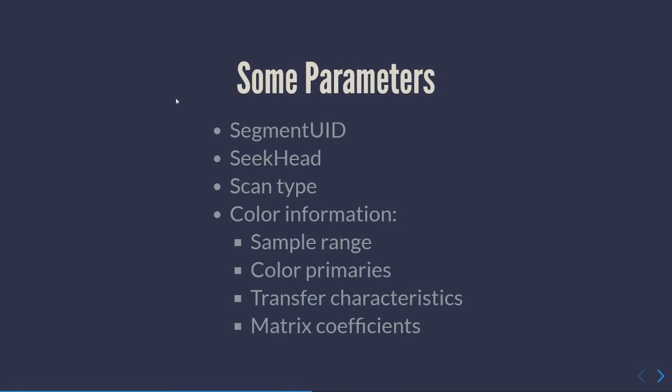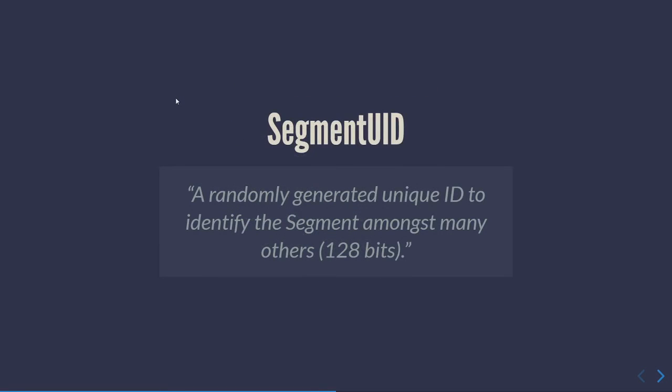Moving to the Matroska container — thanks Steve for helping here. I'm only covering some parameters because Matroska is very powerful. For those familiar with MediaConch — the conformance checking tool — there's a policy called 'is Matroska well described?' The first field is a segment unique identifier: a randomly generated unique number in your file you can use to truly identify this file from any other.